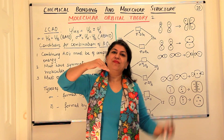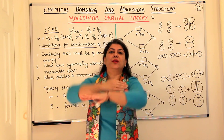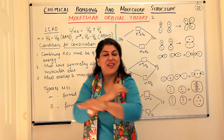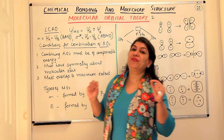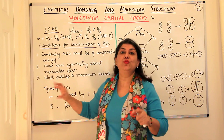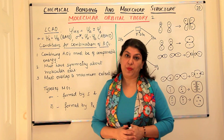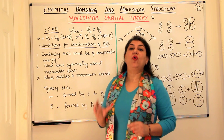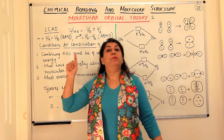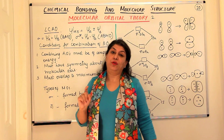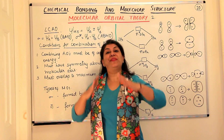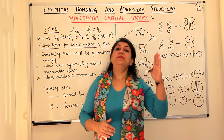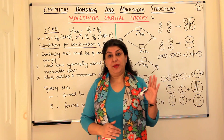That is when the crest of one wave falls over the trough of the other, ultimately it just diminishes. These two types of interferences lead to two types of molecular orbitals. When you have constructive interference, the molecular orbital obtained is a bonding molecular orbital; when the interference is destructive, it results in the formation of an anti-bonding molecular orbital.